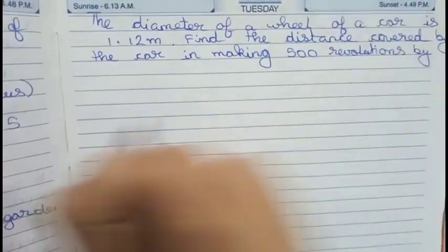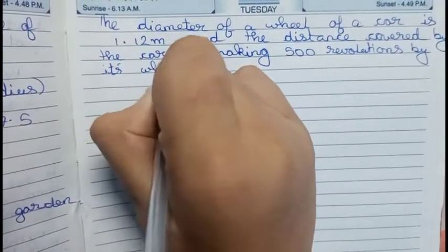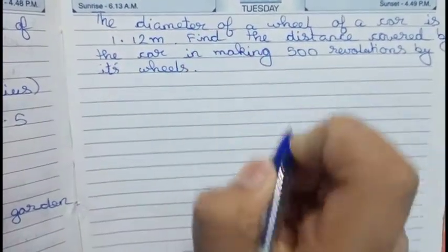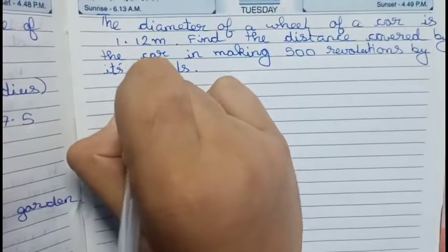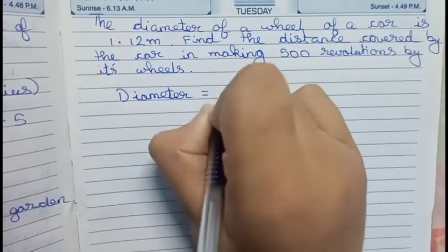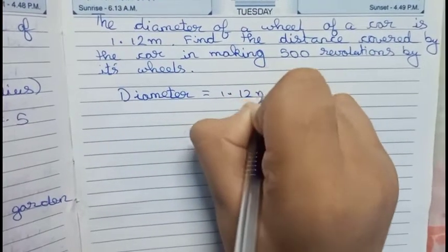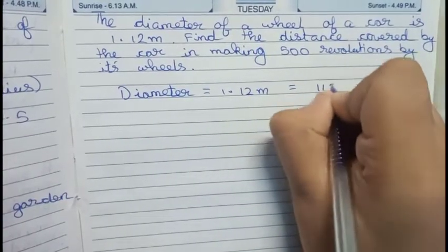So this is our question. Now let's solve this. First we write our diameter, that is 1.12 meters. We convert it into centimeters. It will become 112 centimeters.